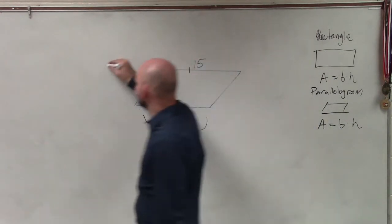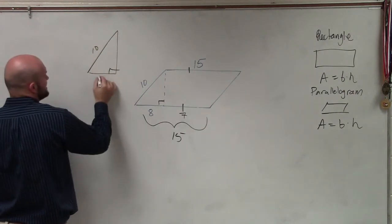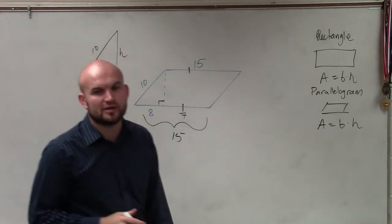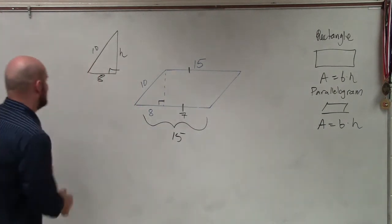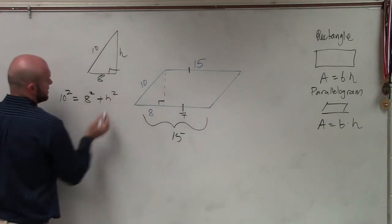So to determine the height, what I'm going to do is I'm going to take out this triangle and I'm going to say, all right, if I have two sides of the right triangle, I can figure out the third side by using the Pythagorean theorem. So to do that, I'll write that out. So I have 10 squared equals 8 squared plus h squared.